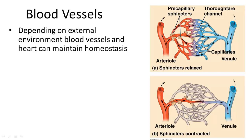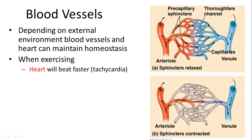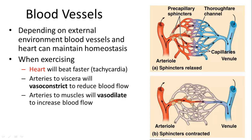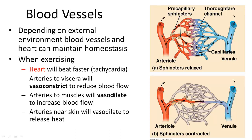Blood vessels and the heart work together to maintain homeostasis. When exercising, the heart beats faster — tachycardia. Arteries to the viscera, such as the digestive system or kidneys, reduce blood flow. Arteries to muscles increase blood flow through vasodilation, and arteries near the skin vasodilate to release heat, which is a byproduct of exercise.